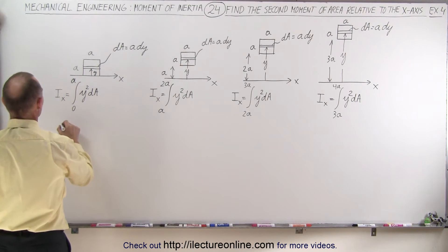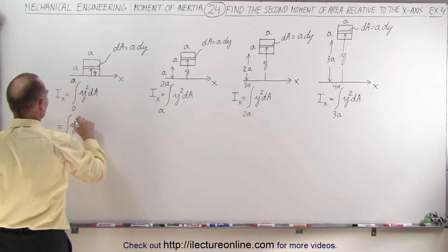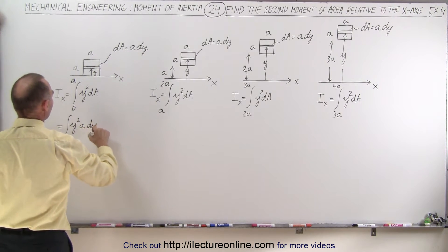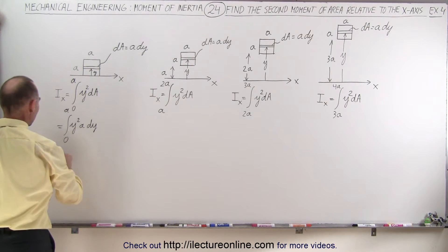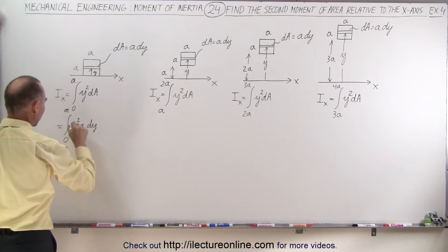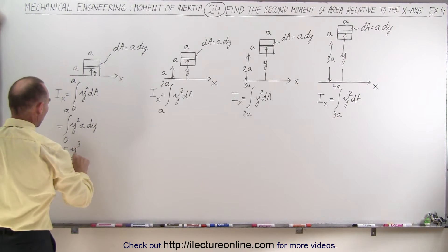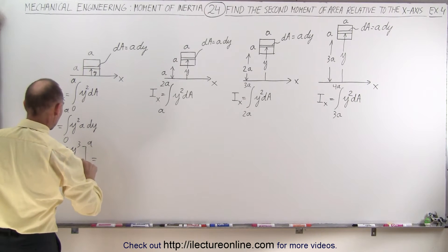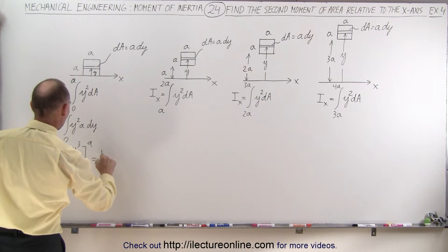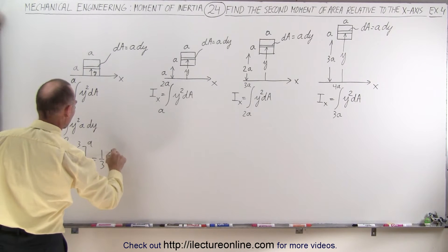So then this becomes equal to the integral of y squared times a, which is y squared a dy, from 0 to a. I can pull out the a, this becomes a times the integral of that, which is y cubed over 3, evaluated from 0 to a, which becomes equal to 1 third a to the fourth power.